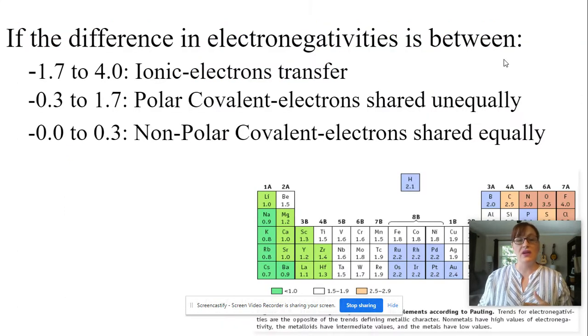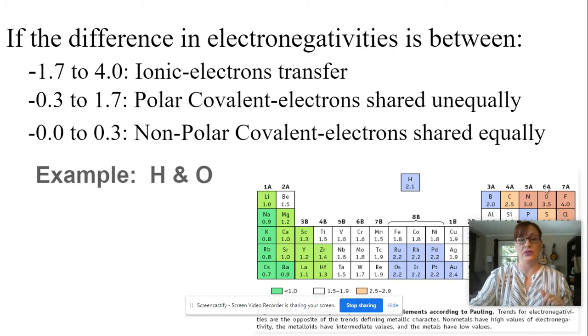So if I take two atoms, like let's take hydrogen and oxygen. Hydrogen is right here, 2.1, and oxygen is right there, 3.5. These are their electronegativities and I'm going to calculate the difference in those two numbers.